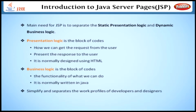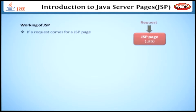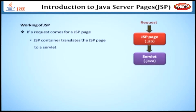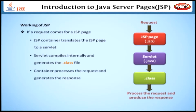Let's look at how JSP works. If a request comes for a JSP page, the JSP container translates the JSP page to a servlet. Then the servlet compiles internally and generates the .class file. Finally, the container processes the request and generates the response. We will discuss the lifecycle of JSP in detail shortly.